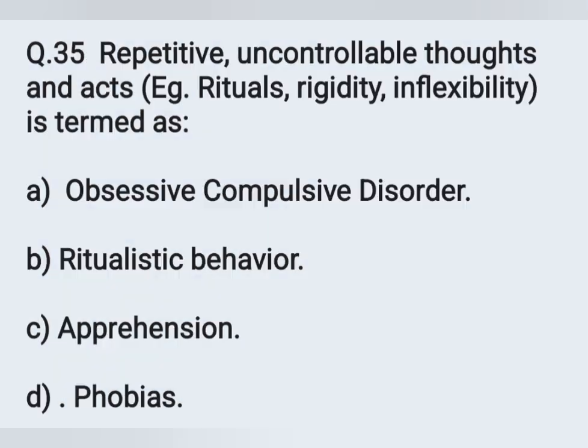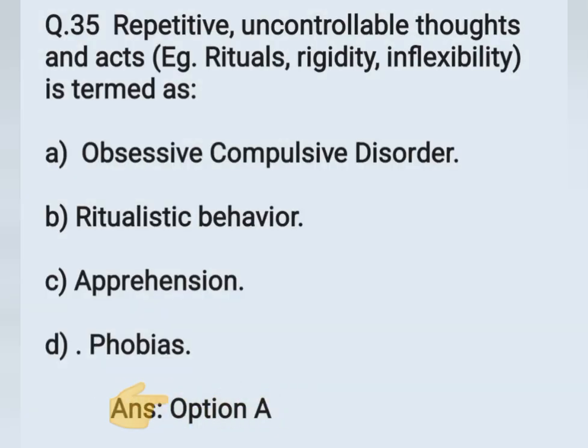Question number 35. Repetitive, uncontrollable thoughts and acts — examples: rituals, rigidity, inflexibility — is termed as — Option A: Obsessive-compulsive disorder. Option B: Ritualistic behavior. Option C: Apprehension. Option D: Phobias. The correct answer is OCD — Obsessive-compulsive disorder — Option A.